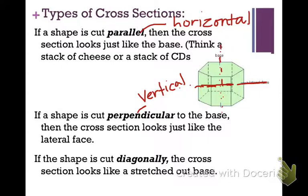The perpendicular cut takes the look of a lateral face. This shape here is a hexagonal prism. So if it is a parallel or horizontal cross section, it would be a hexagon. If it is a vertical cross section, it is a rectangle. And if it is cut diagonally, the cross section is a stretched-out version of the base.